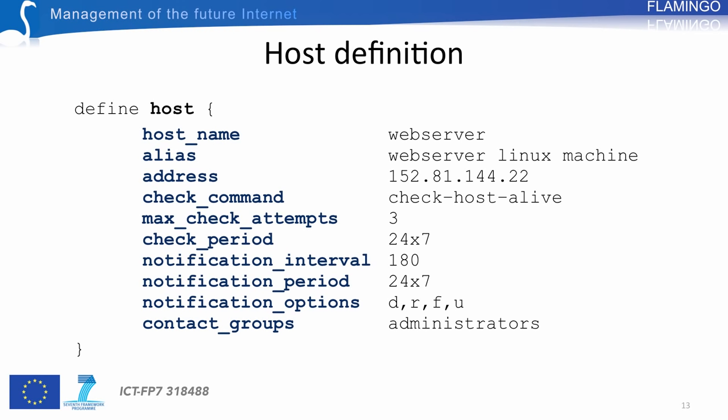U indicates unreachable, meaning Nagios cannot estimate the status — for instance, because the router to access this server is not running. The last attribute is contact_group, indicating the group of persons to contact when notifications are sent. It is not possible to directly indicate a single contact; you must first specify a group of contacts and then associate one or more contacts to that group.